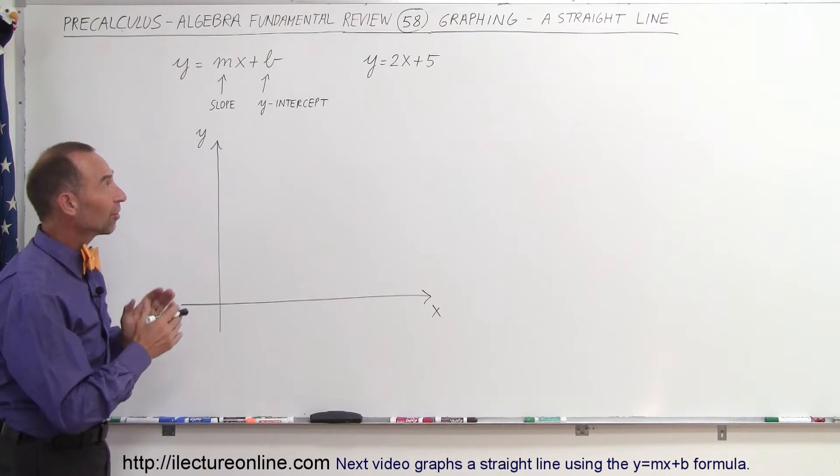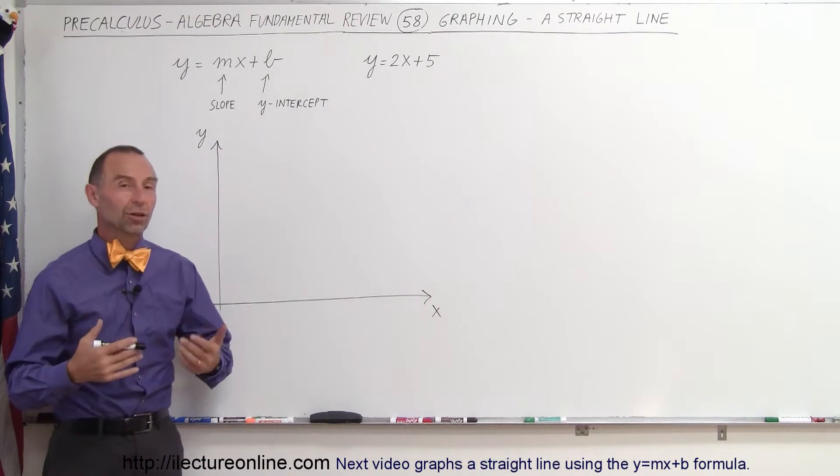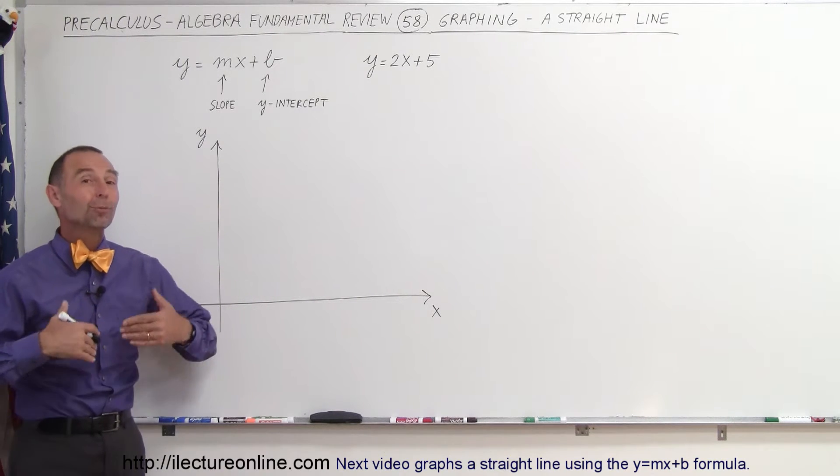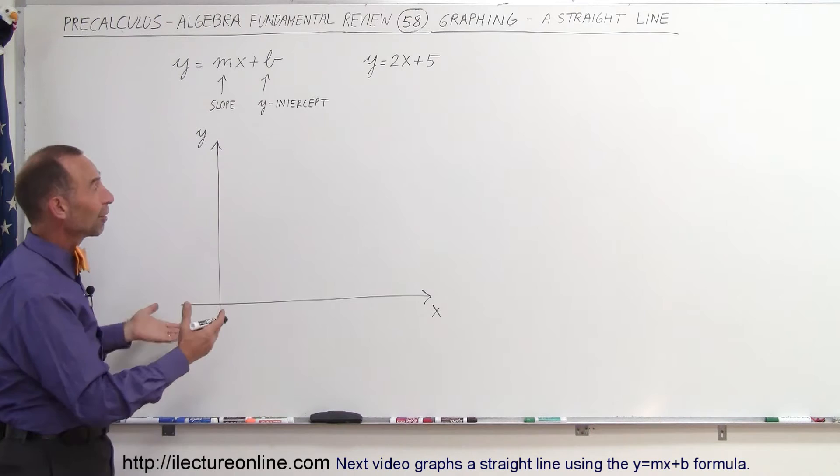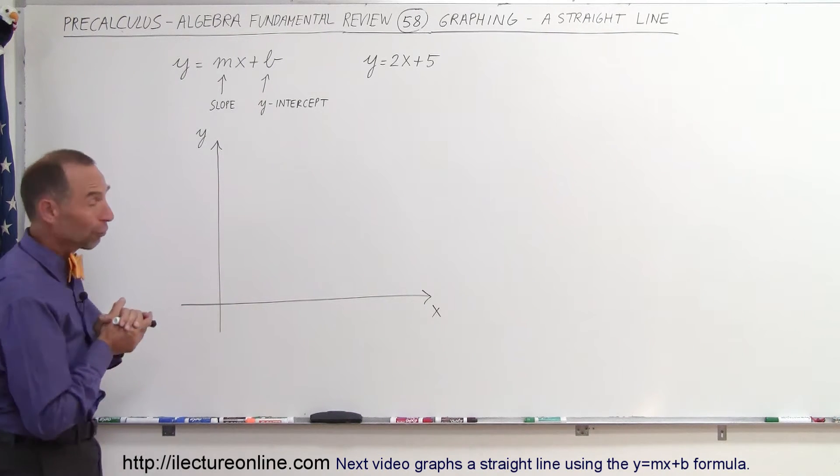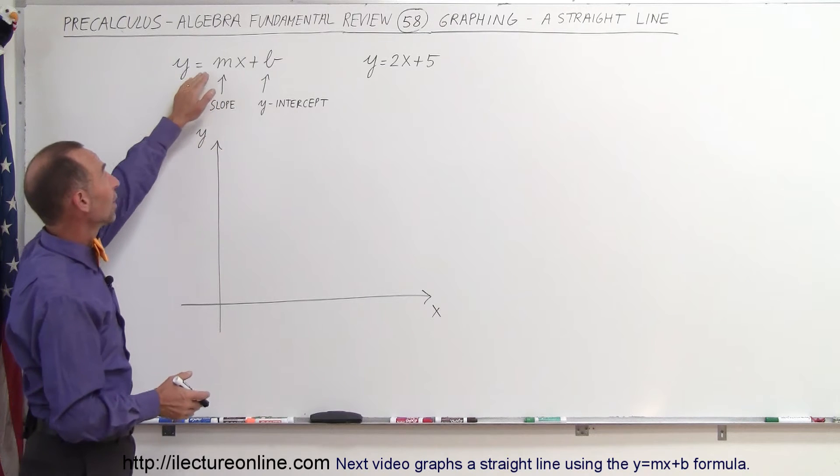Welcome to ElectronLine. In our next series of videos continuing with the general algebra review, we're going to review how to graph various types of things. We'll start out with a simple one called a straight line, and the formula for a straight line is y equals mx plus b.